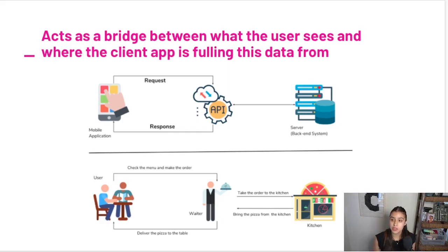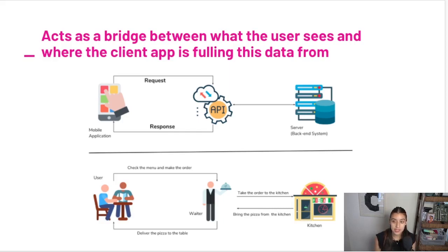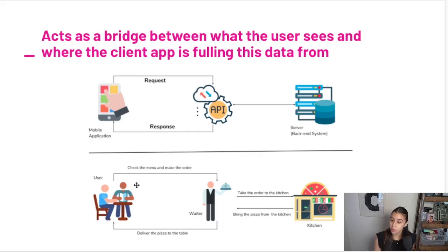An API acts as the bridge between what the user sees in a client app — meaning an app where a user is physically interacting with the interface, like the buttons and nav bar — and where the client app is pulling data from. This example shows a mobile application making a request via the API. The API goes to the backend system, runs a mechanism to pull the data, and then gives back the mobile app what it's looking for in a response. It's like a waiter going back and forth between the user and the kitchen to request what the user wants and then serve it back.